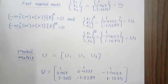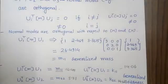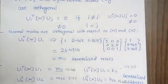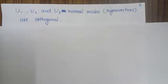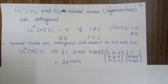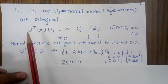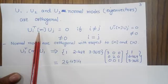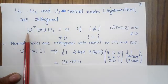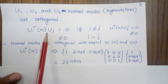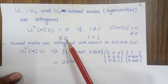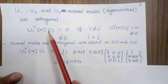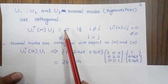In this session we will learn one important property of normal modes known as the orthogonal property. The normal modes are said to be orthogonal when they follow this condition: if I multiply the transpose of one normal mode with the mass matrix and then multiply again with another normal mode, I get either zero or non-zero depending on my choice. If i is not equal to j, I get a zero value.